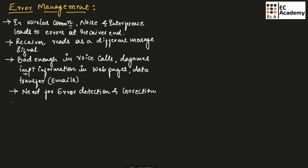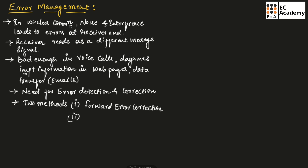There are several ways for error detection and correction. We will discuss two methods. The first one is forward error correction, and the second one is automatic repeat request.